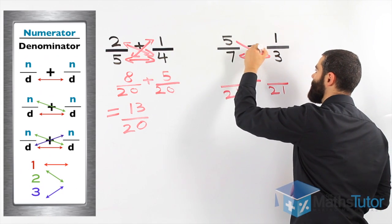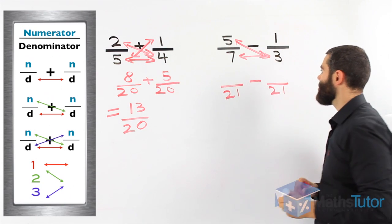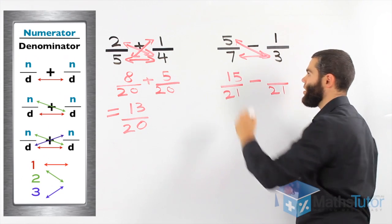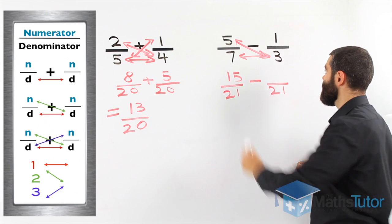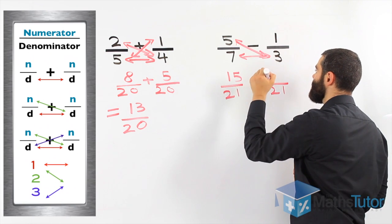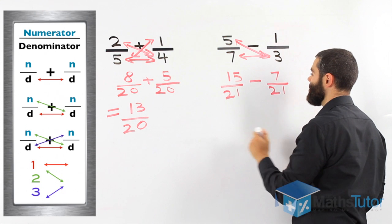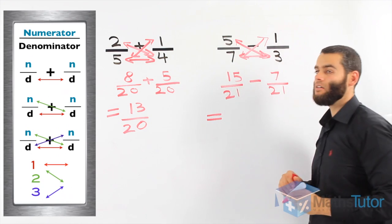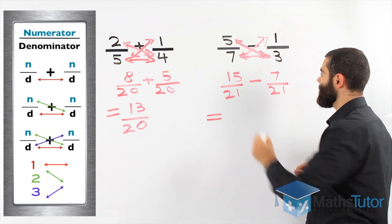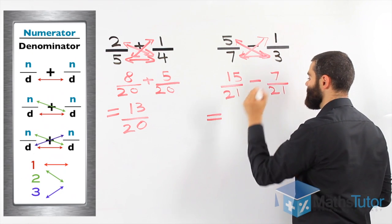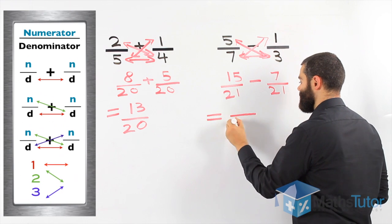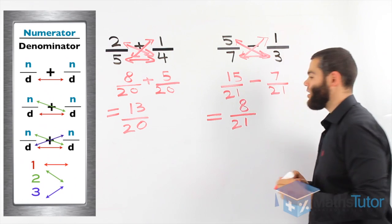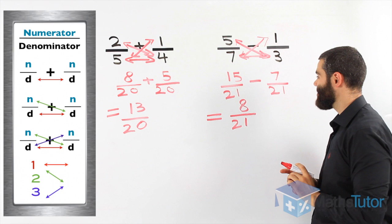Then, the numerator times the second denominator. Five times three is fifteen. And lastly, one times seven is seven. We put our arrow just to show our working out. One times seven is seven. Fifteen, take away seven. Twenty-one here. Our answer is eight over twenty-one.